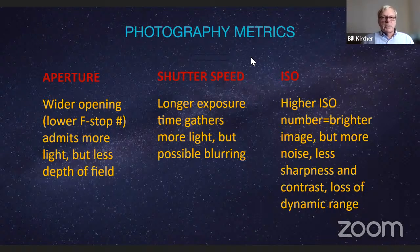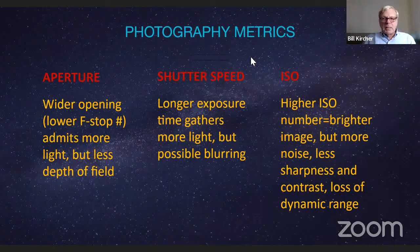Shutter speed: the longer your shutter is open, the more light you can gather — but there's a problem. The rotation of the night sky means everything appears to be moving east to west, and your image will quickly become blurred unless you keep your exposures relatively short. At night you might get up to maybe 5 or 6 seconds depending on your equipment; a nightscape maybe 15 or 30 seconds. Then you need a tracking mount — something that moves with the sky and rotates with the images.